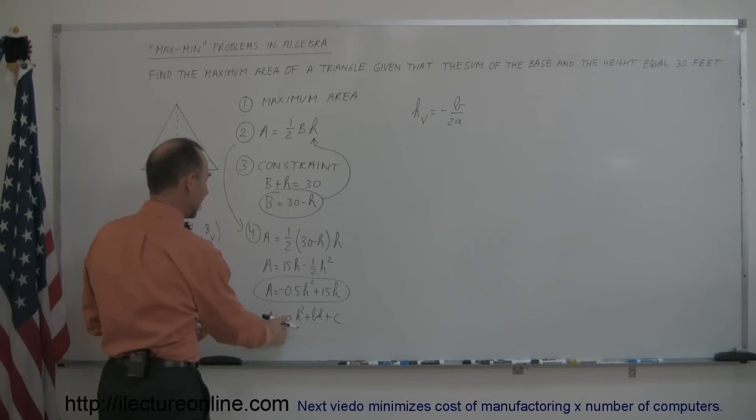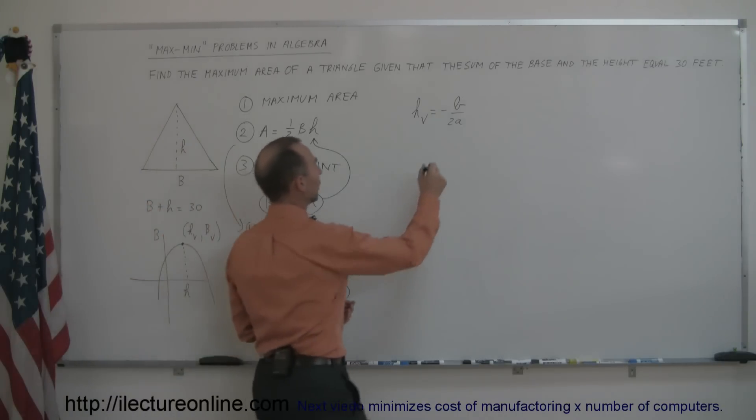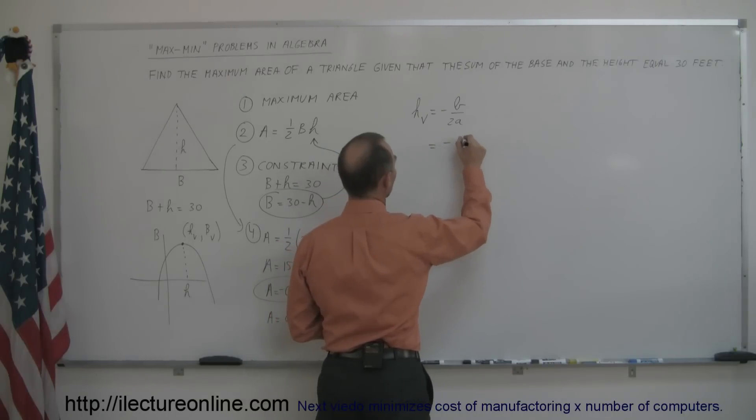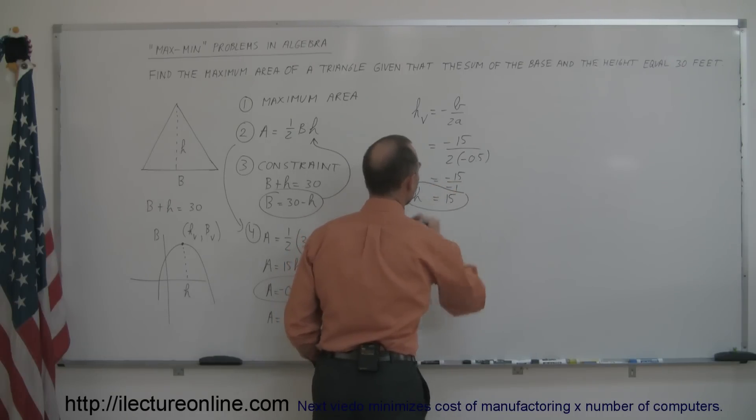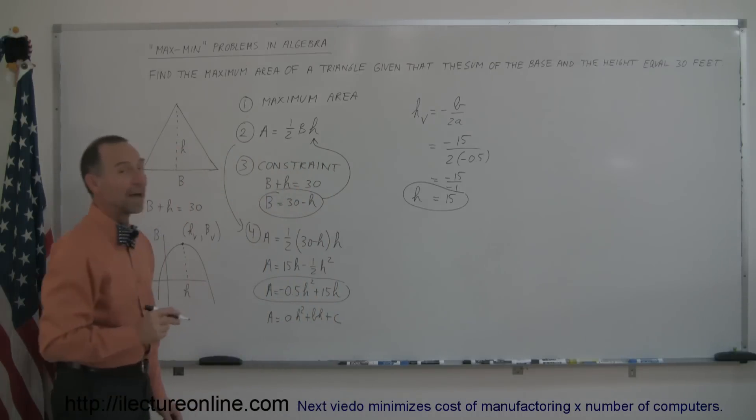Since a is equal to minus 0.5 and b is equal to 15, we can say that this is equal to minus 15 divided by 2 times a minus 0.5. So this is equal to minus 15 over minus 1 or equal to 15. So h equals 15 should give us the maximum area.